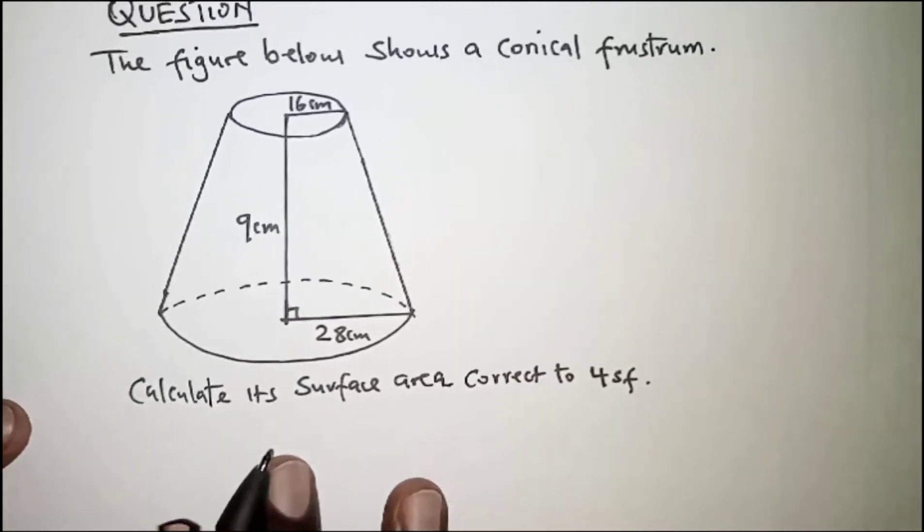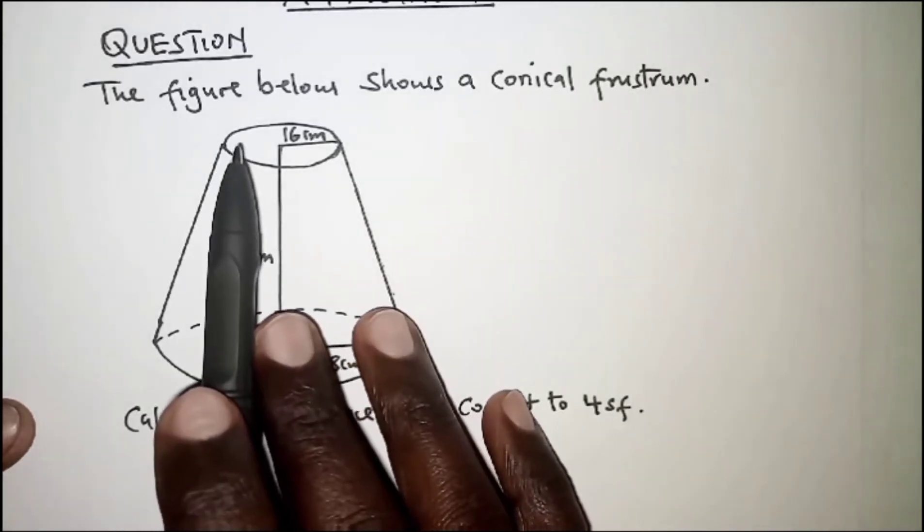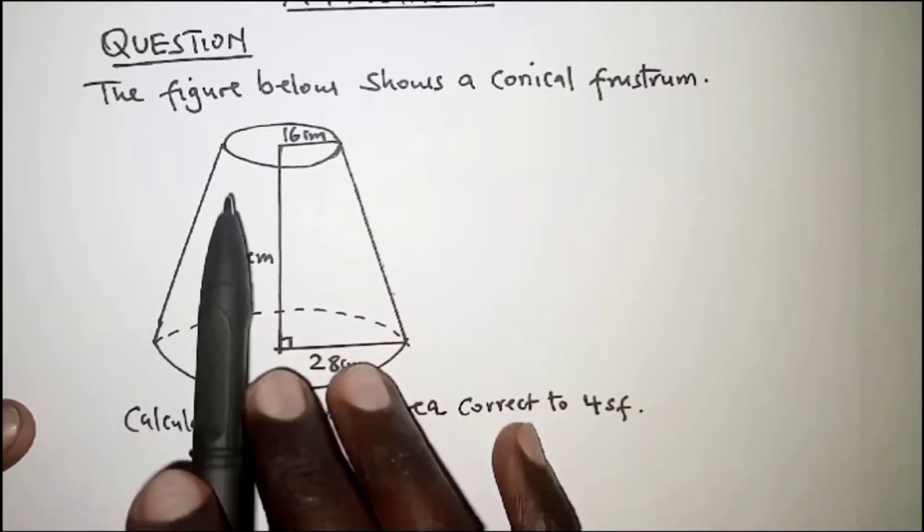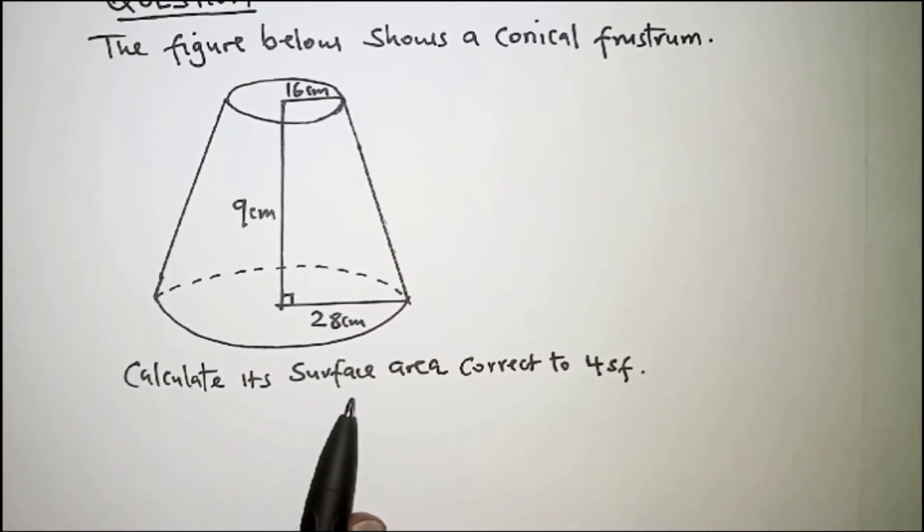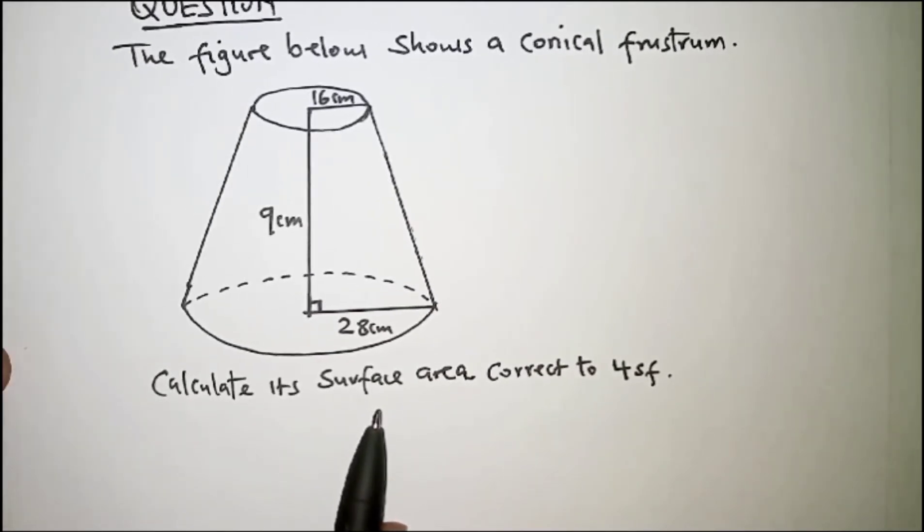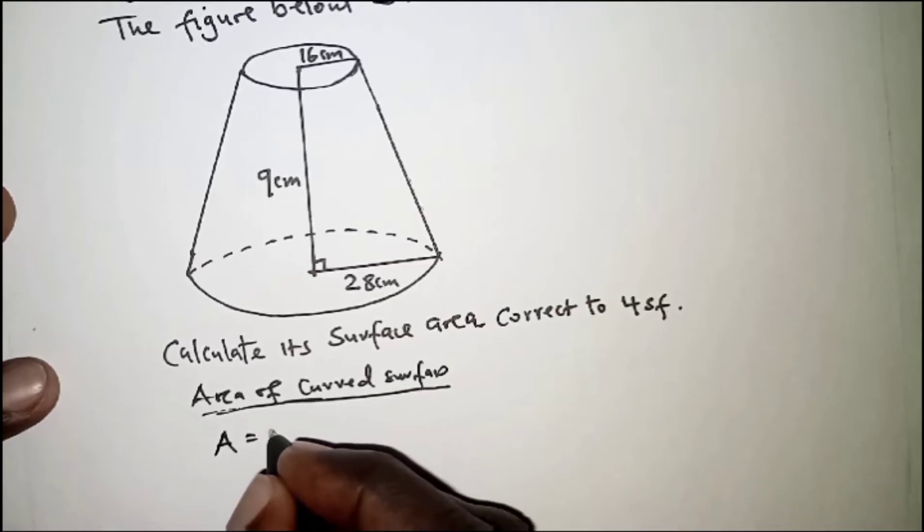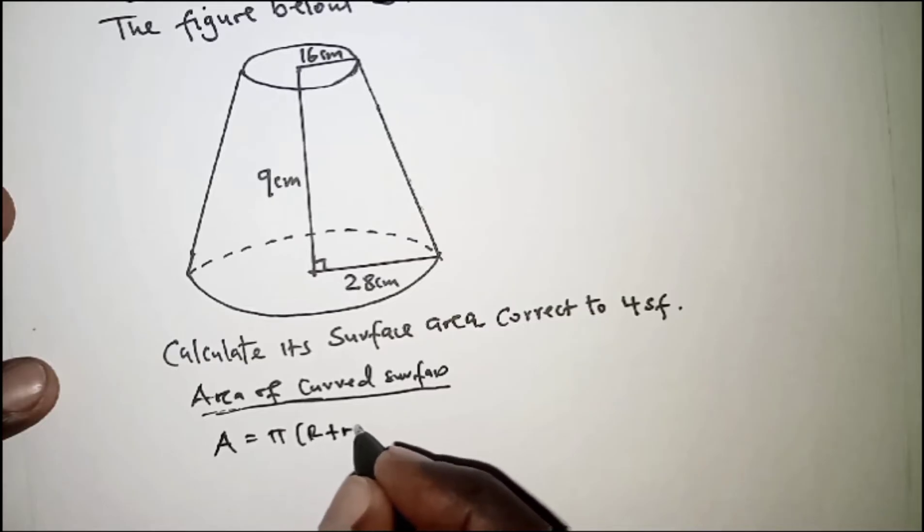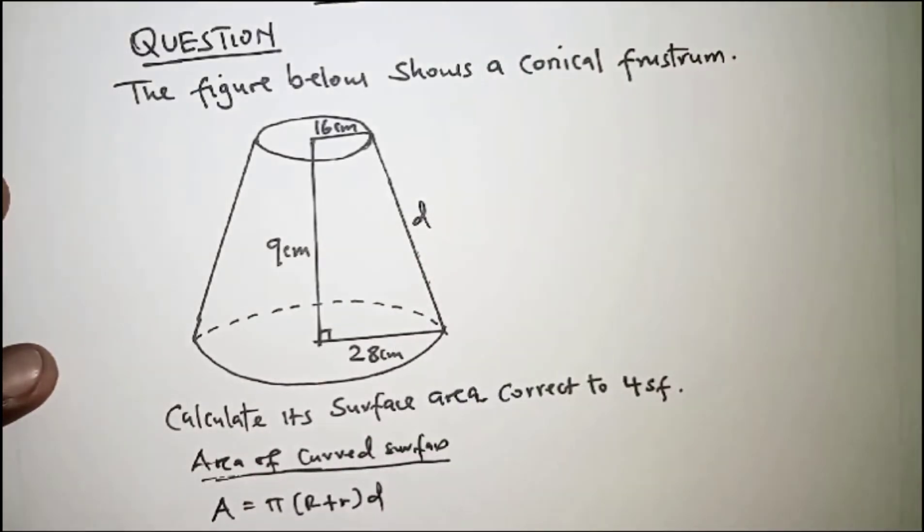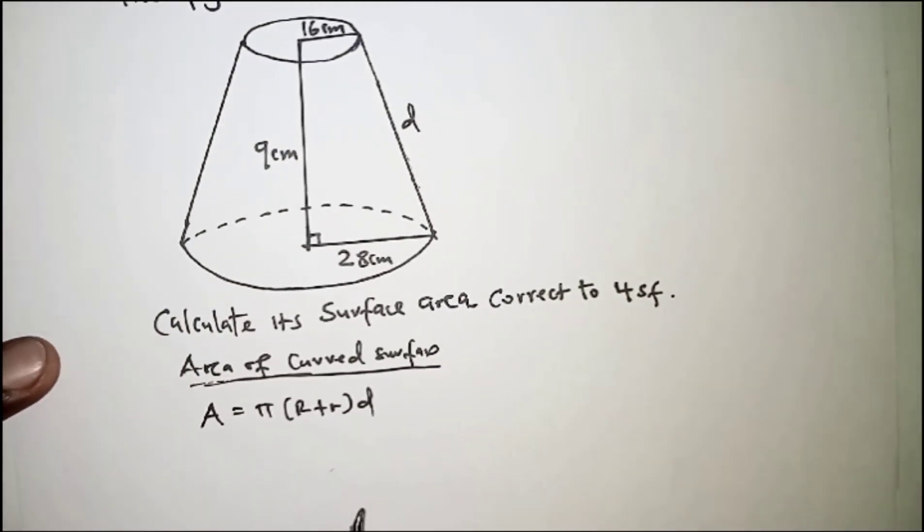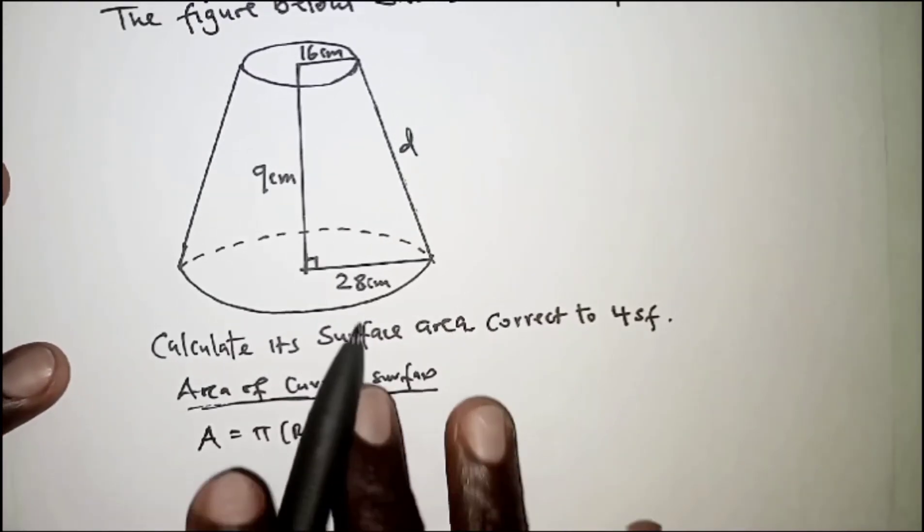We'll get the area of the curved surface, and then we'll get the sum of the areas of the top and the bottom parts, and then we sum them up. Beginning with the area of the curved surface, we'll have this formula: area is equal to π(R+r)d, where d is the slant height of the frustum. So the first thing we need to determine in this question is the value of d.